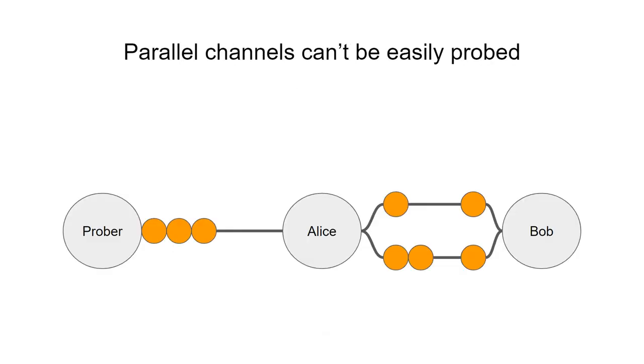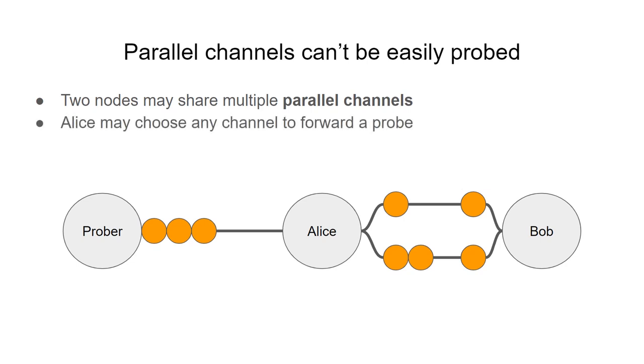The question that our work is focused on is what happens if Alice and Bob share multiple channels. Such channels are called parallel, so what happens in the context of probing here? If the prober sends a probe through parallel channels, Alice, in this example, is free to choose any of the two channels to forward a probe to Bob.